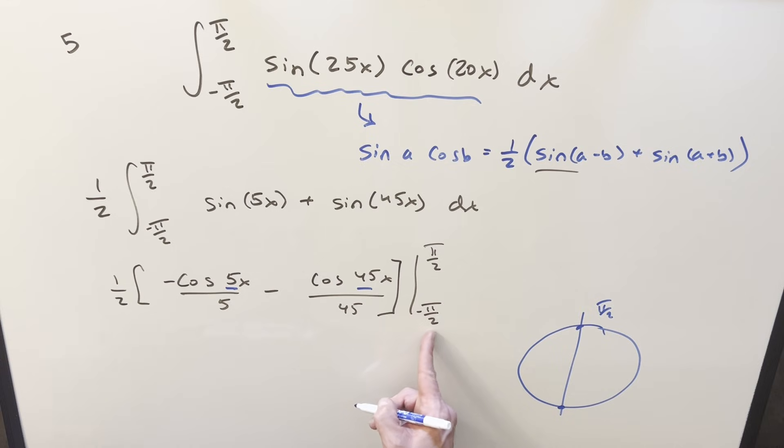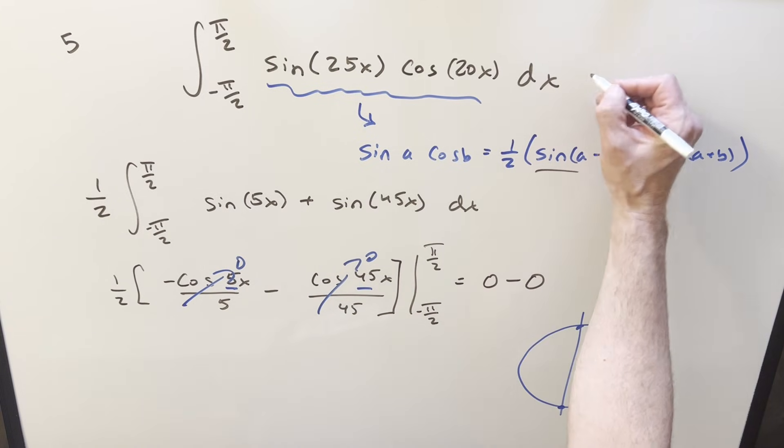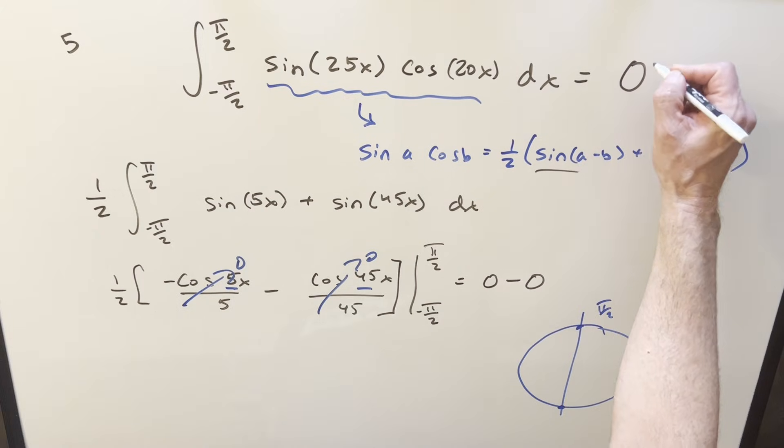So the same thing that's happening here is going to happen the other way too. For the minus values with the odd coefficient here, each of these are going to be zero in every case. And so we end up with just zero minus zero, or our solution is just zero.